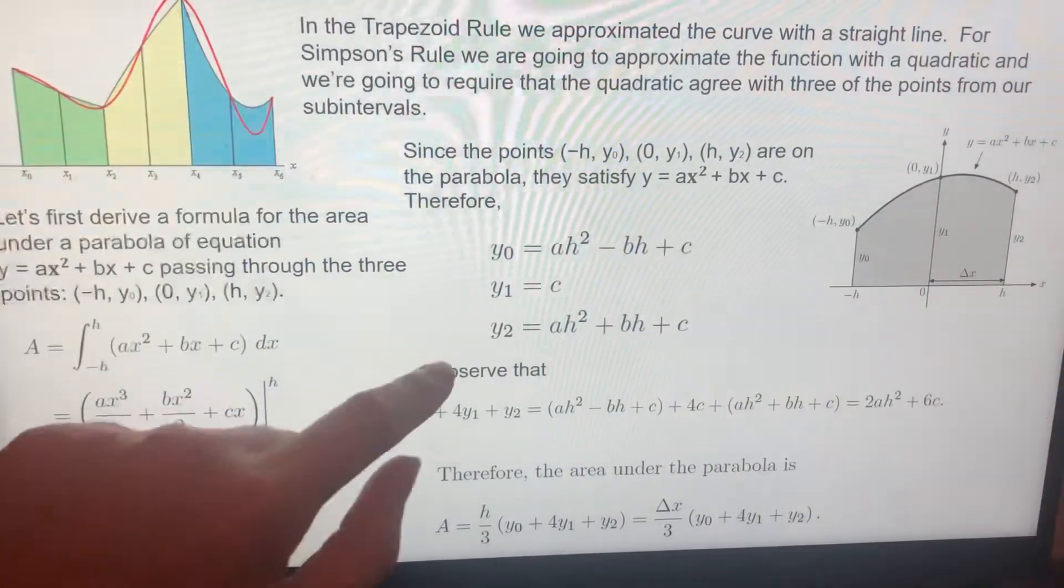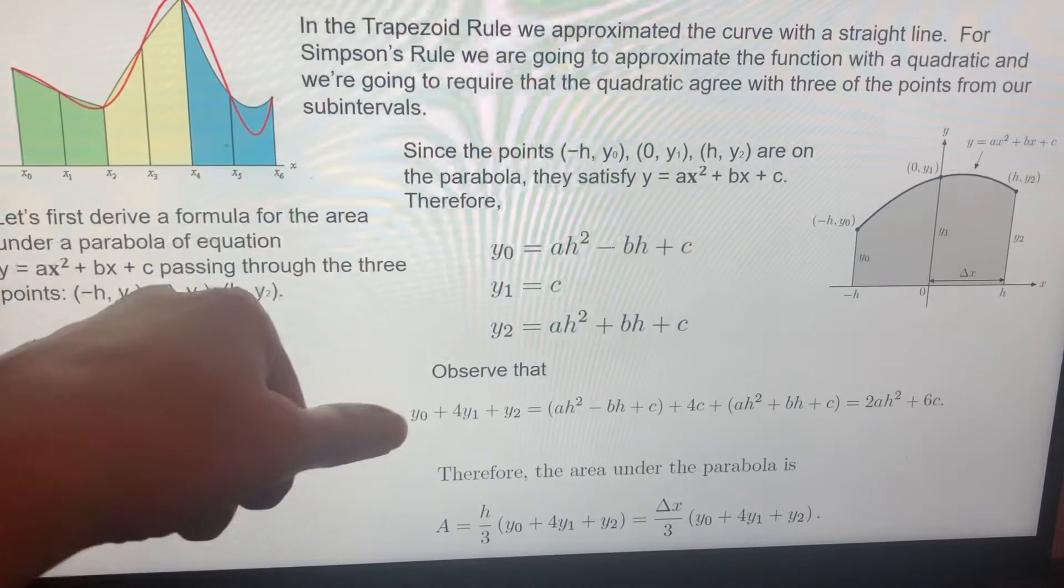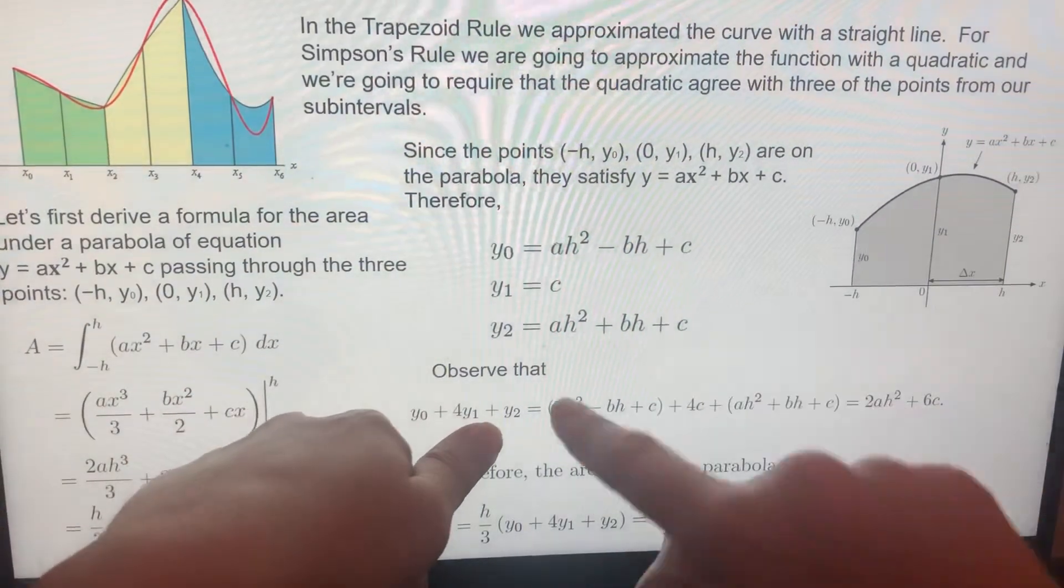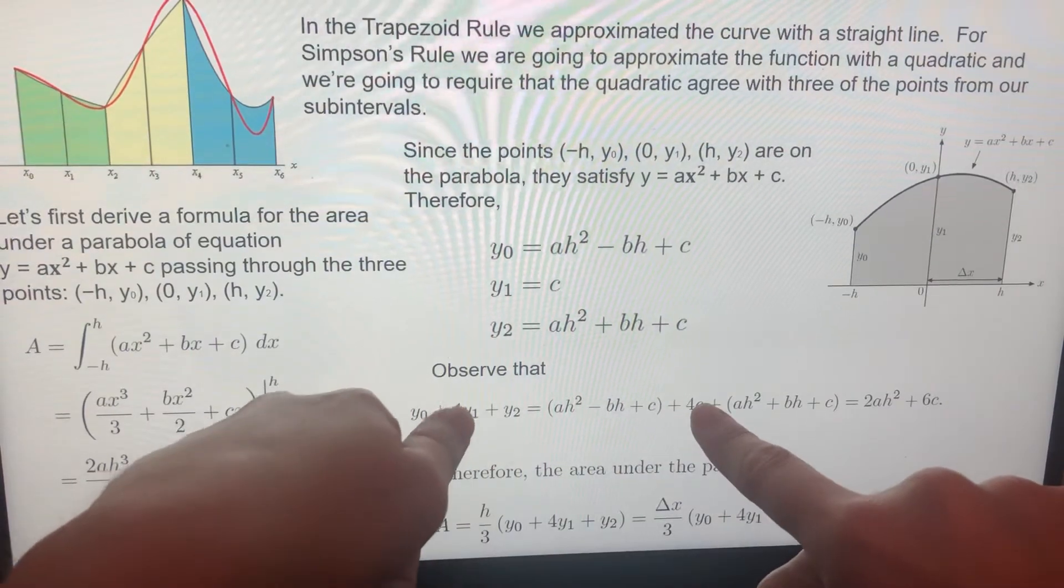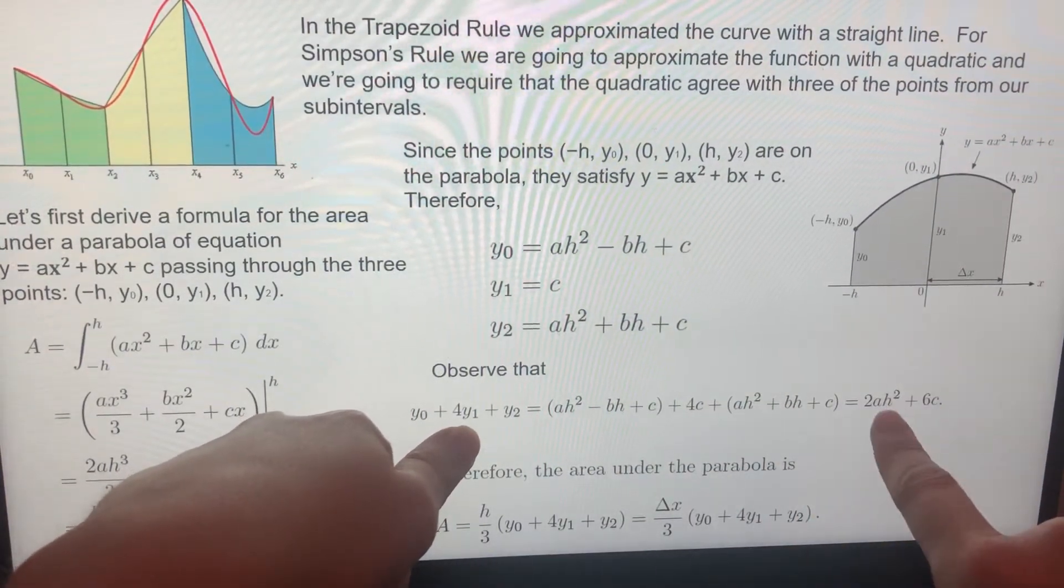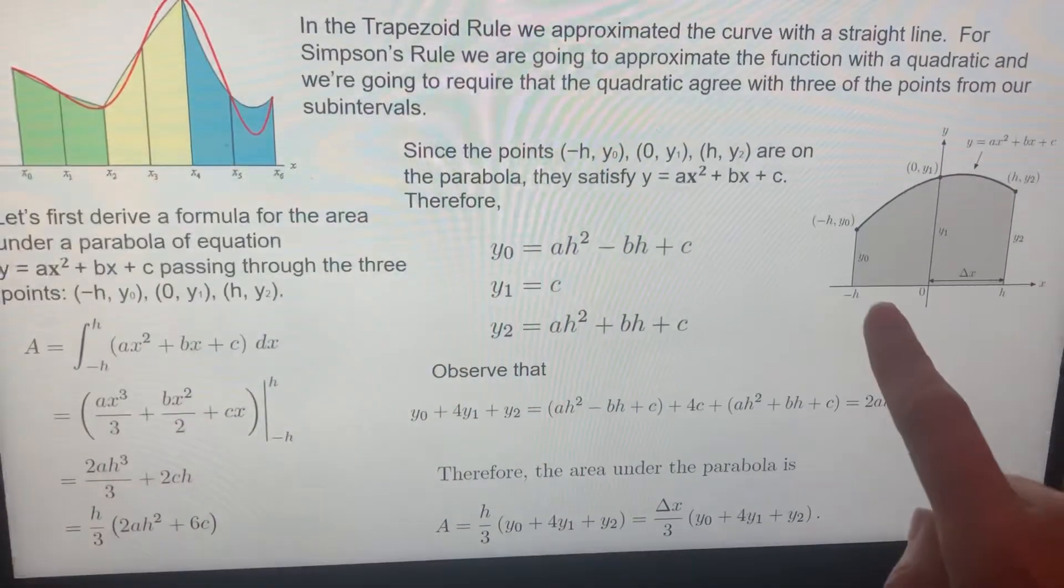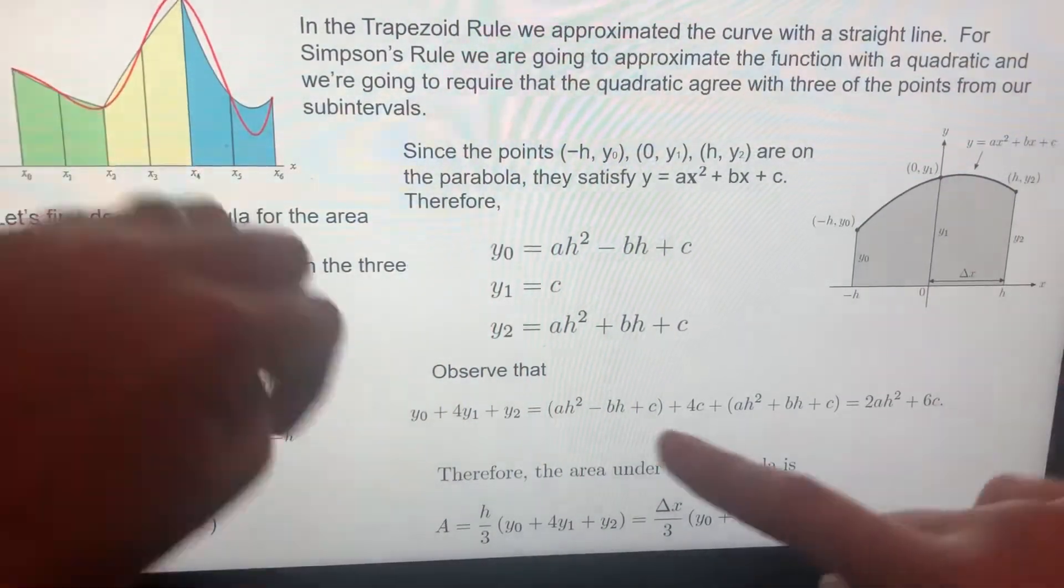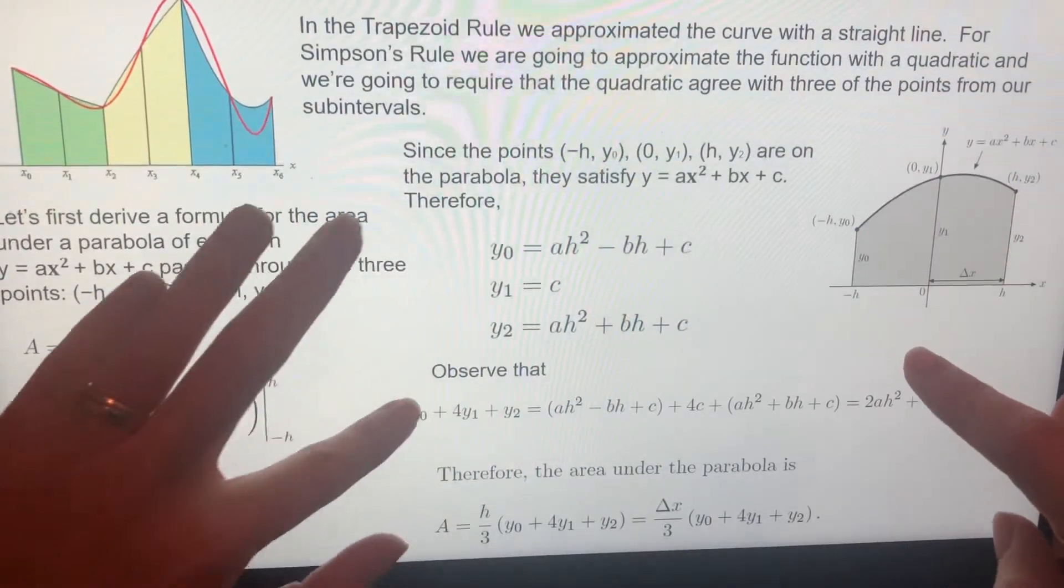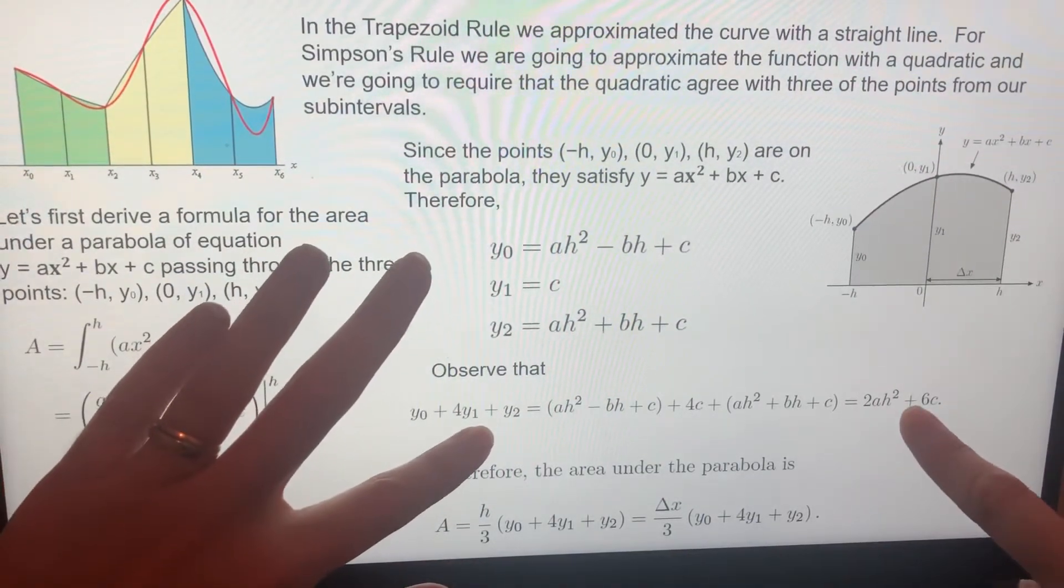Now, between those three equations, let's observe. What is y zero plus four y one plus y two? y zero plus four y one plus y two is two a h square plus six c. Now, why did we find this? Keep this one in mind, keep this in your pocket. This relation equals to that one.